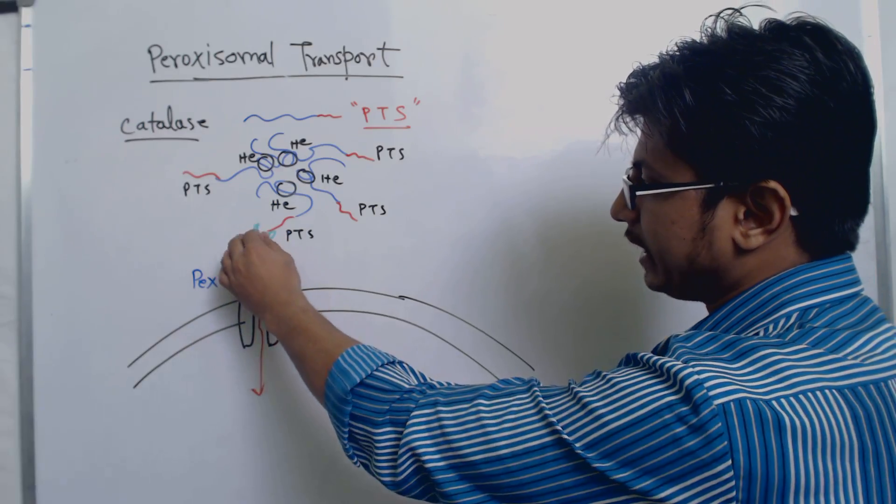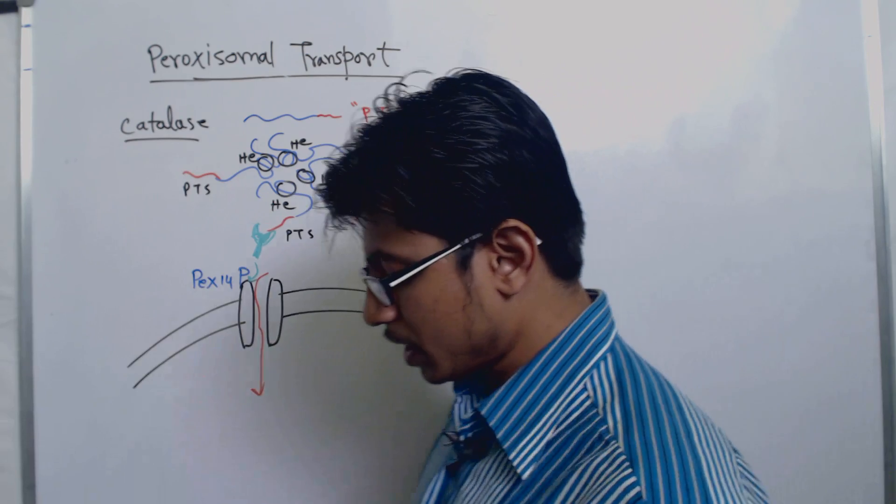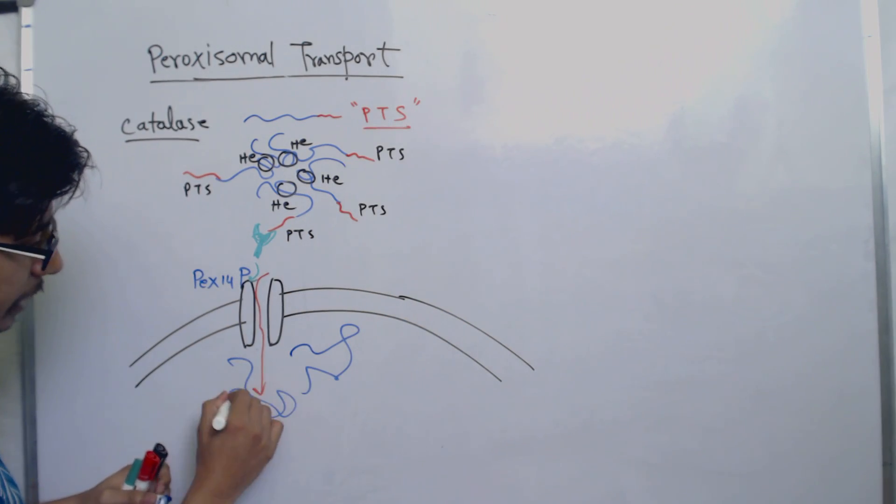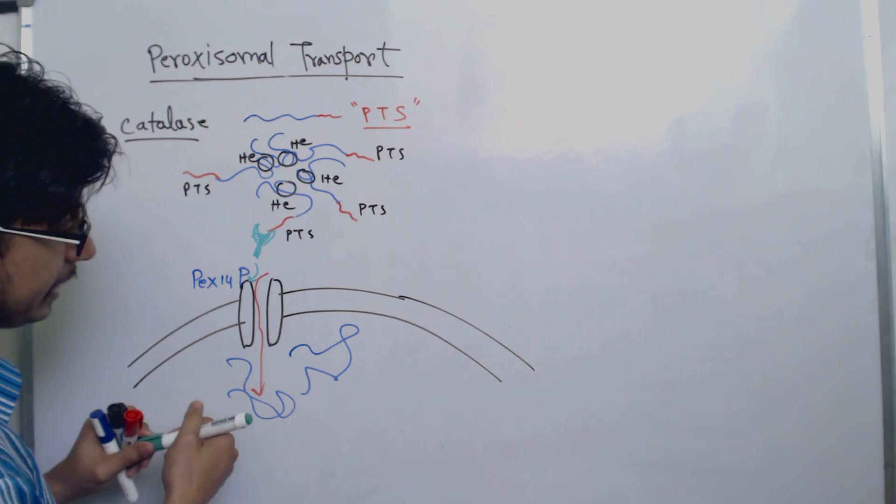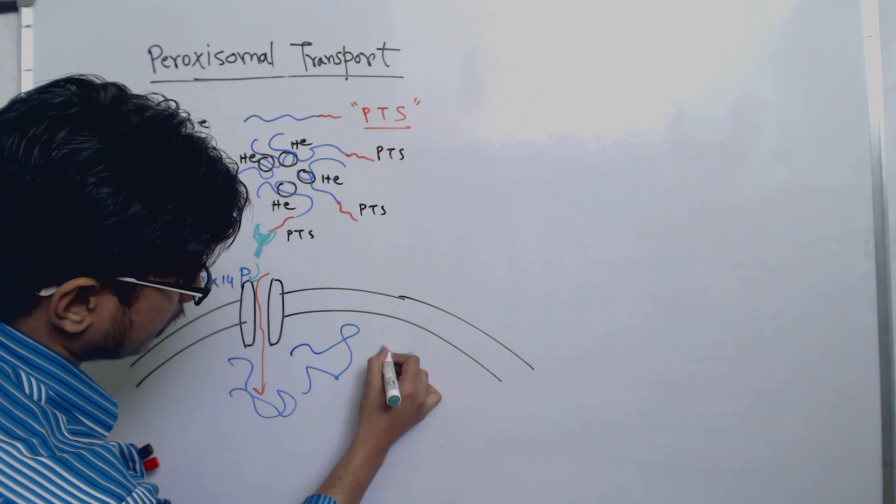This PTS will bring all the protein complexes inside the peroxisome. The target polypeptides and proteins are brought inside the peroxisome. The PTS1R, or PTS receptor, is now released.